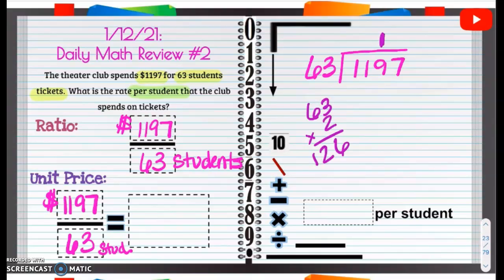So it can only go in one time there. And then, 63 times 1 is 63. So we're going to subtract. 9 minus 3 is going to be 6. 1 minus 6, we can't do. So this one becomes a 0 to make this an 11. 11 minus 6, 7, 8, 9, 10, 11 is 5. So we have 56 and now we're going to drop that 7. So now we have 567.